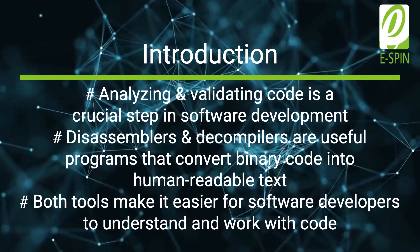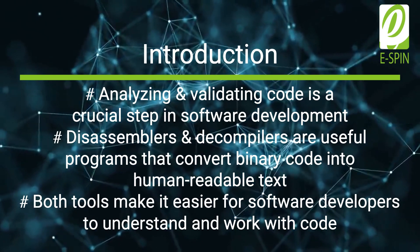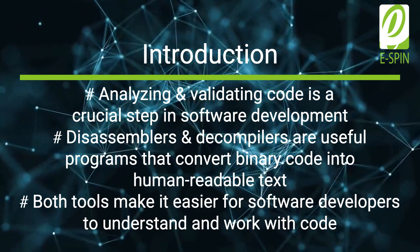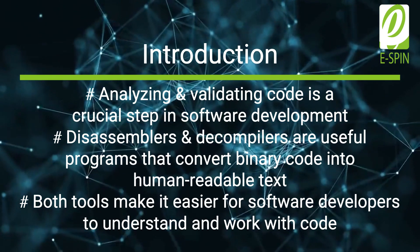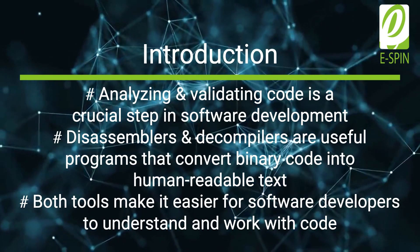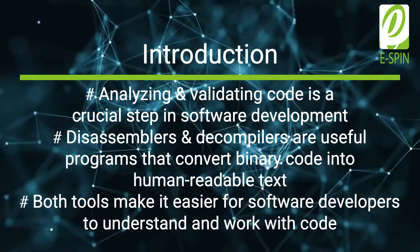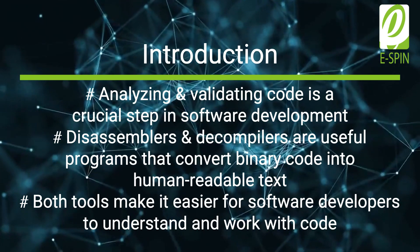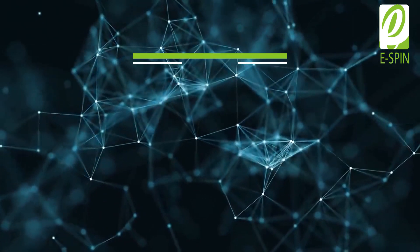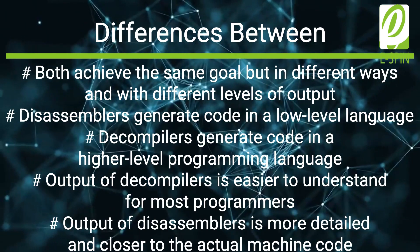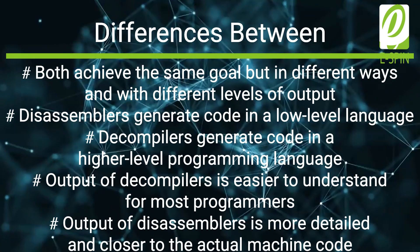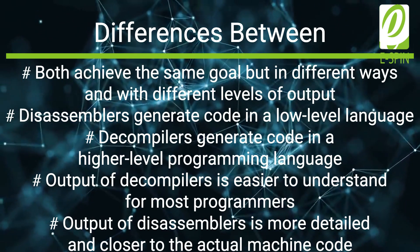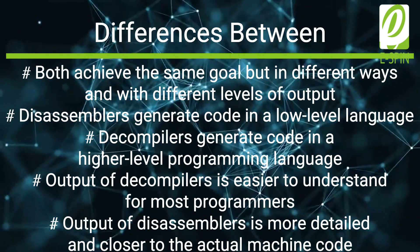When it comes to software development, analyzing and validating code is a crucial step in the process. This is where disassemblers and decompilers come in handy. Both programs convert binary code into human-readable text to make it easier for software developers to understand and work with. However, there are some key differences between disassemblers and decompilers that set them apart. While they both achieve the same goal, they do it in different ways and with different levels of output.